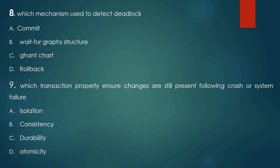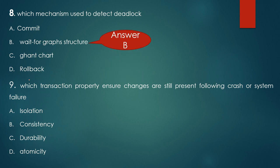Which transaction property ensures changes are still present following a crash or system failure? Options: atomicity, durability, consistency, isolation.